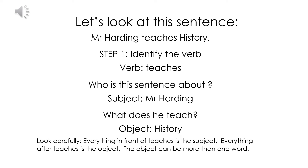Who is the sentence about? It's about Mr. Harding, so our subject is Mr. Harding. Next, we identify our object — everything after our verb is our object. What does he teach? He teaches history, so our object is history. Everything in front of teaches is the subject and everything after teaches is the object. Remember, the object can be more than one word.